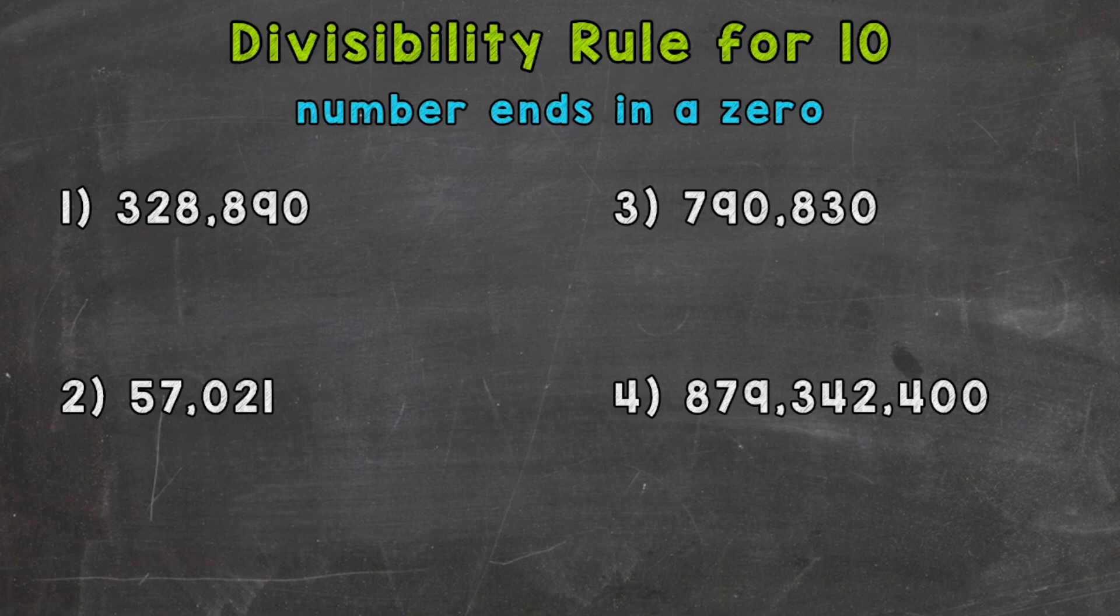Now remember, when we're checking for divisibility, we're checking to see if we can divide without getting a remainder, so the given numbers work out exactly. In the case of this video, we're going to go through four examples and see if they're divisible by 10 based on the rule at the top of the screen. If a number ends in a zero, it's divisible by 10.